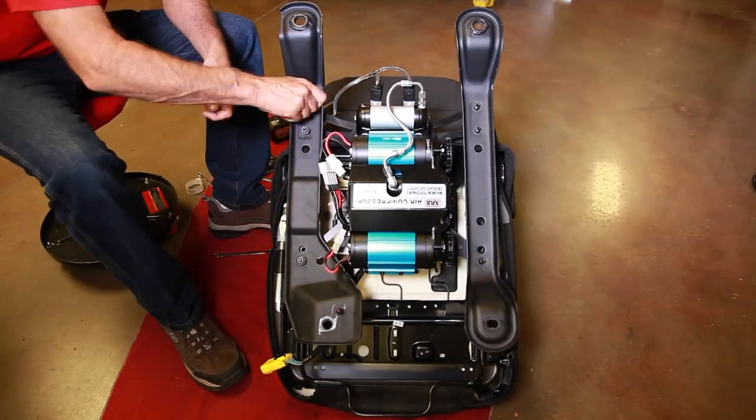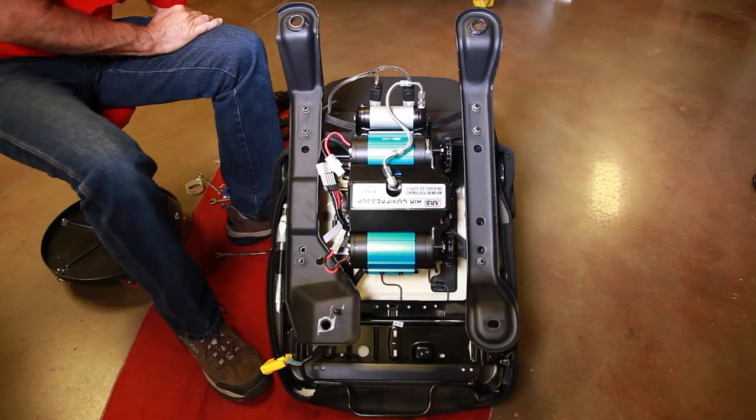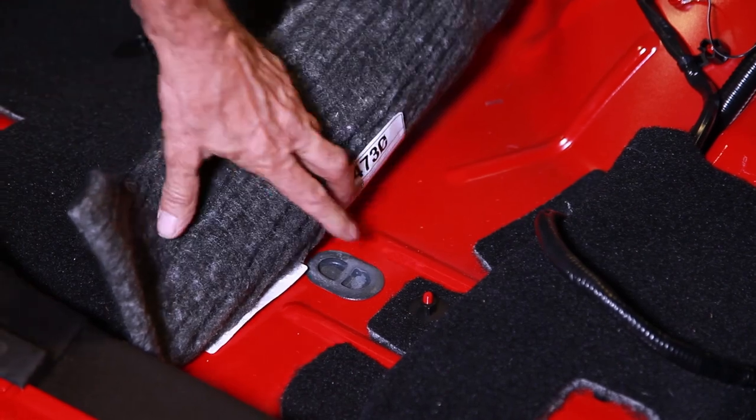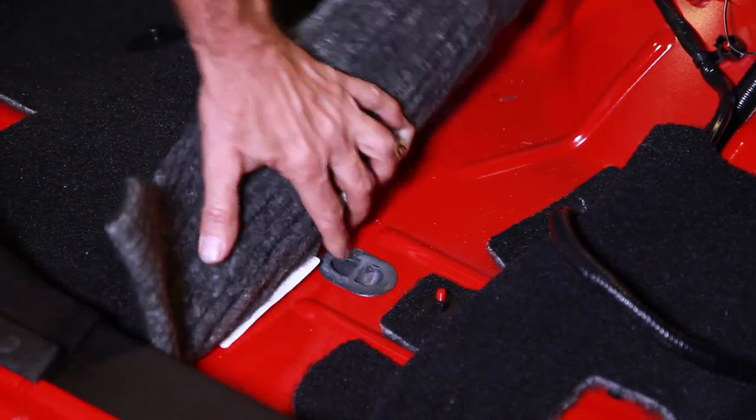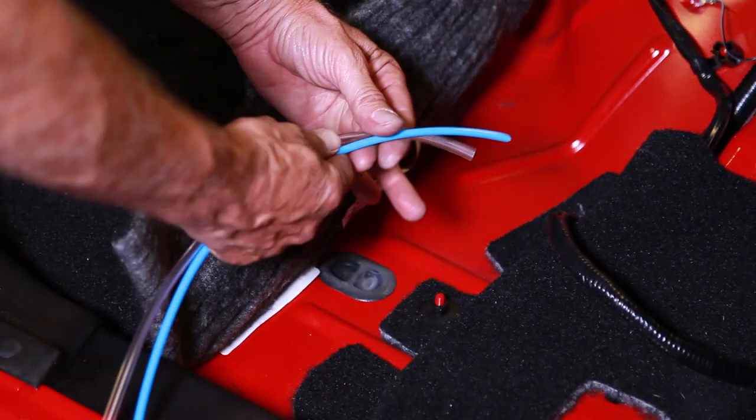Reinstall the seat mounts and tighten using a 13 millimeter. There's a floor drain under the passenger seat that works great for the vent hose as well as to run your ARB lines.